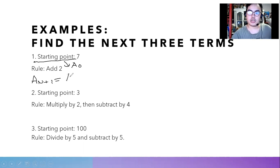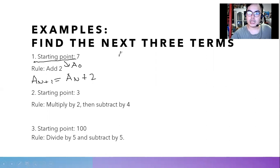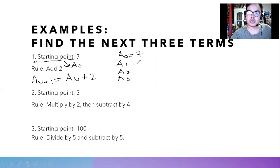So a sub n is the current term. We're going to add by two since our rule is to add two. Our a sub zero, also known as the starting point, is seven. We're looking for the next three terms, so a sub one is seven plus two.